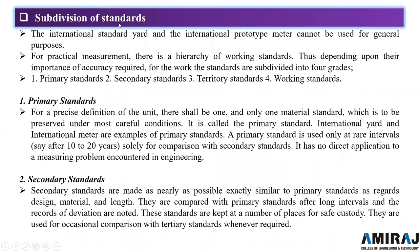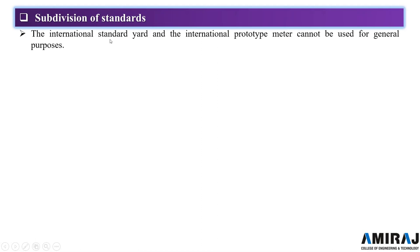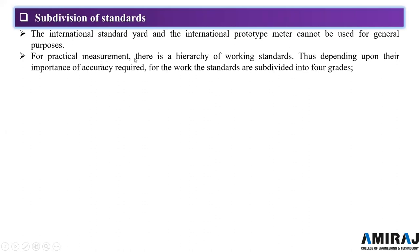The international standard yard and prototype meter cannot be used for general purposes, as they are costly and difficult to manufacture. For practical measurement, there is a hierarchy of working standards depending upon the importance of accuracy required. Working standards are subdivided into four grades.